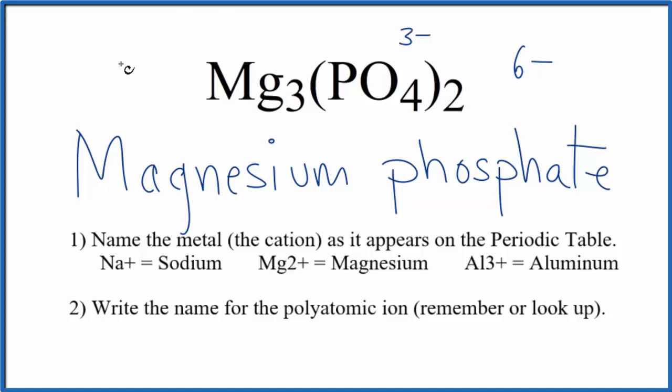So we have to get 6 plus over here in order to have the charges balance out, have a net charge of 0. So 3 times something will give us 6 plus. 3 times 2 plus, that gives us 6 plus. And we know magnesium, that's in group 2, so it should have a 2 plus ionic charge.